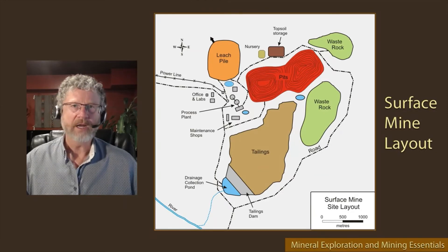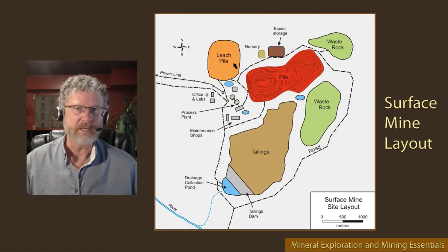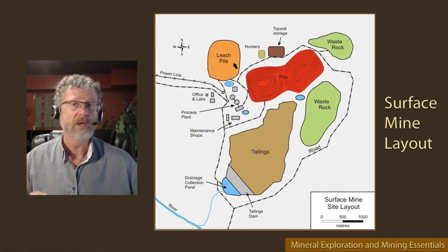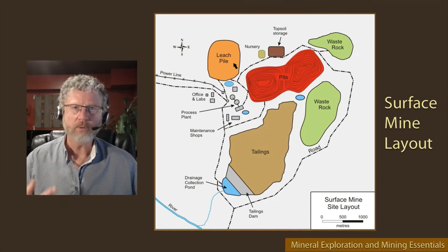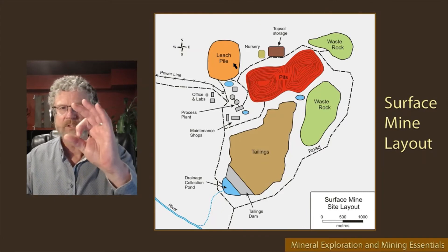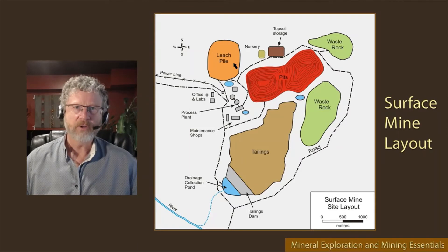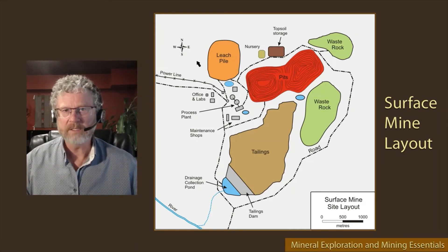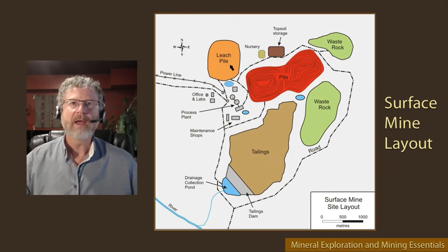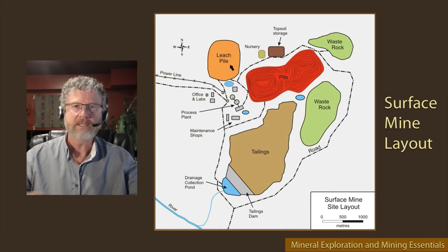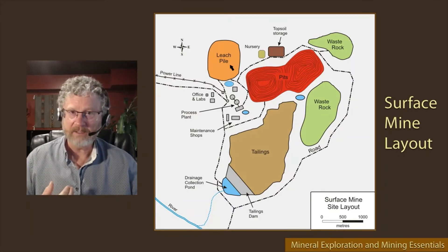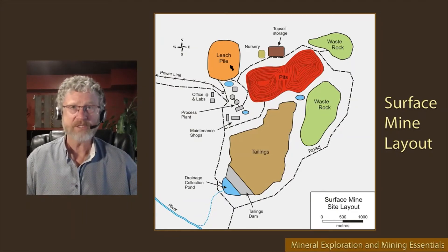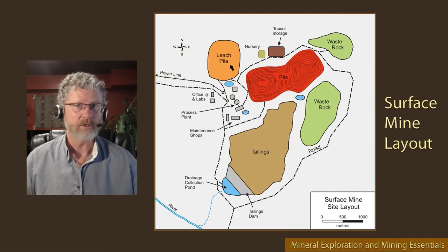A leach pad — not all mine sites will have one. In some cases the ore in the deposit is one where the metals can be leached out of the rocks directly without the need to go through a grinding phase. The rock still needs to be crushed, maybe down to a certain size, but after crushing the ore is placed on these leach piles or leach pads and solutions are percolated down through the pile to leach out the metals. The most common type of ore for which leaching works is oxide ore.